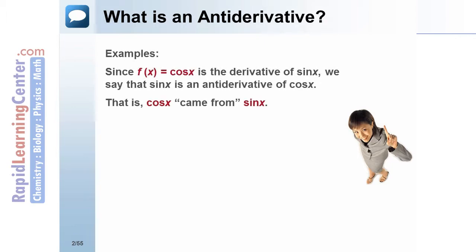Examples. Since f'(x) = cos x is the derivative of sin x, we say that sin x is an antiderivative of cos x. That is, cos x came from sin x.